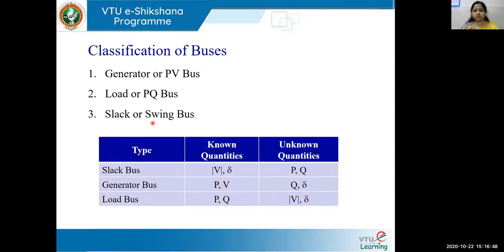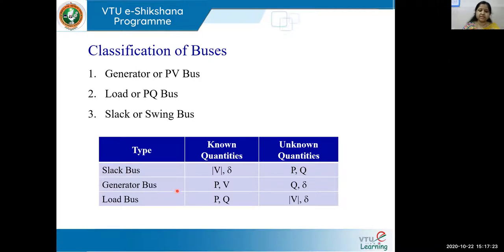In the table we have three types of buses. For each bus, out of the four parameters — real power, reactive power, magnitude of voltage, and angle — two are known and two are unknown. For the slack bus: known are magnitude of voltage and angle; unknown are P and Q. For the generator bus (PV or voltage control bus): known are P and magnitude of V; unknown are Q and delta. For the load bus (PQ bus): known are P and Q; unknown are V and delta.